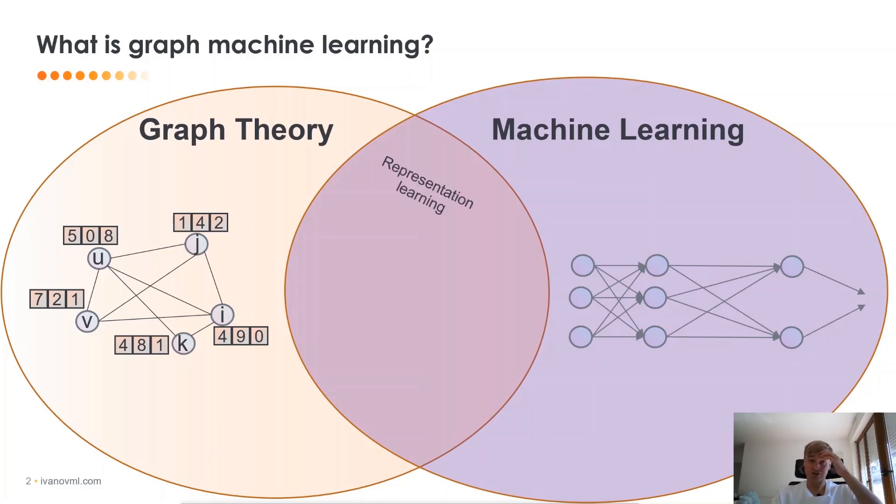First of all, it's representation learning, which is how can we develop embeddings for the graphs for ML models. It's Graph Neural Networks, which is how can you learn those embeddings, how can you apply them later for downstream tasks.